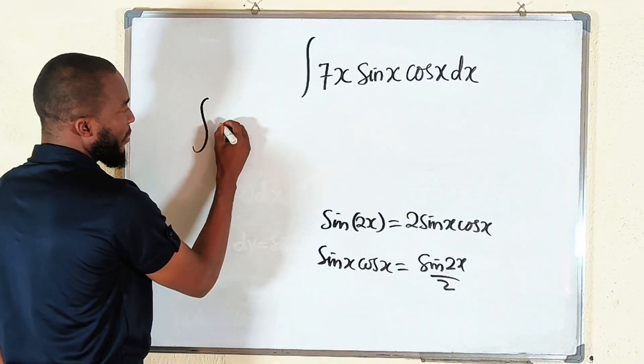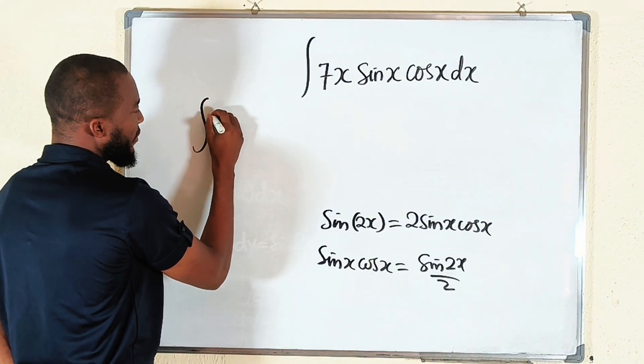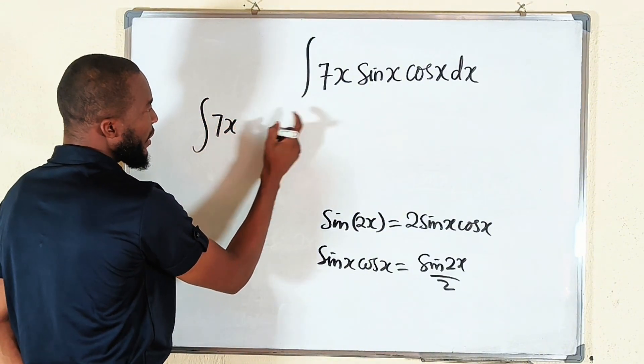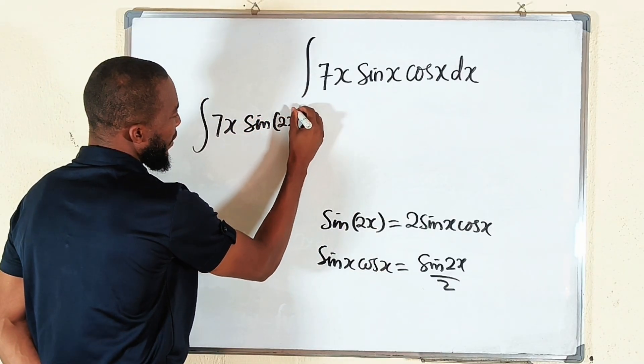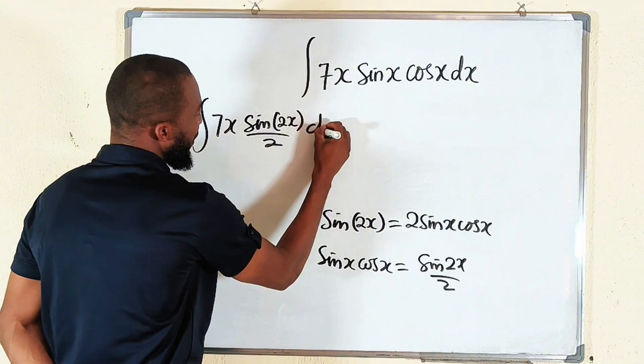So our integral becomes 7x, then we use this one, sin of 2x divided by 2 dx.